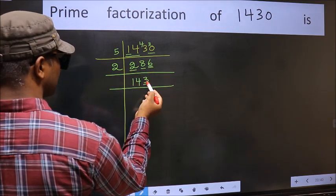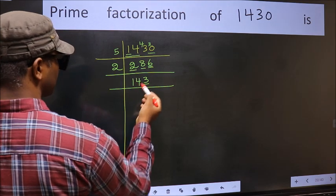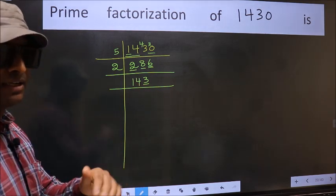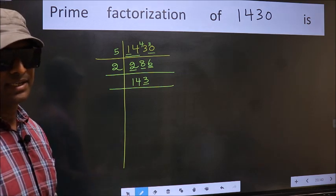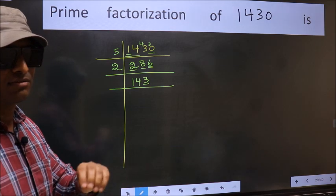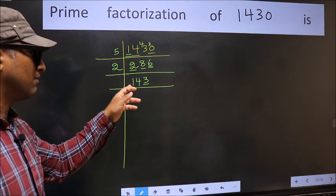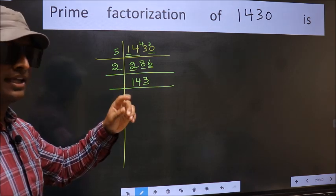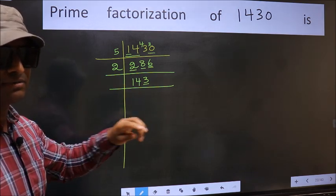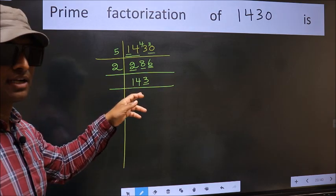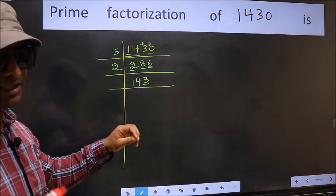Now last digit 3 is not even, so not divisible by 2. Next prime number 3. To check divisibility by 3, we should add the digits: 1+4+3=8. And 8 is not divisible by 3, so this number is also not divisible by 3.